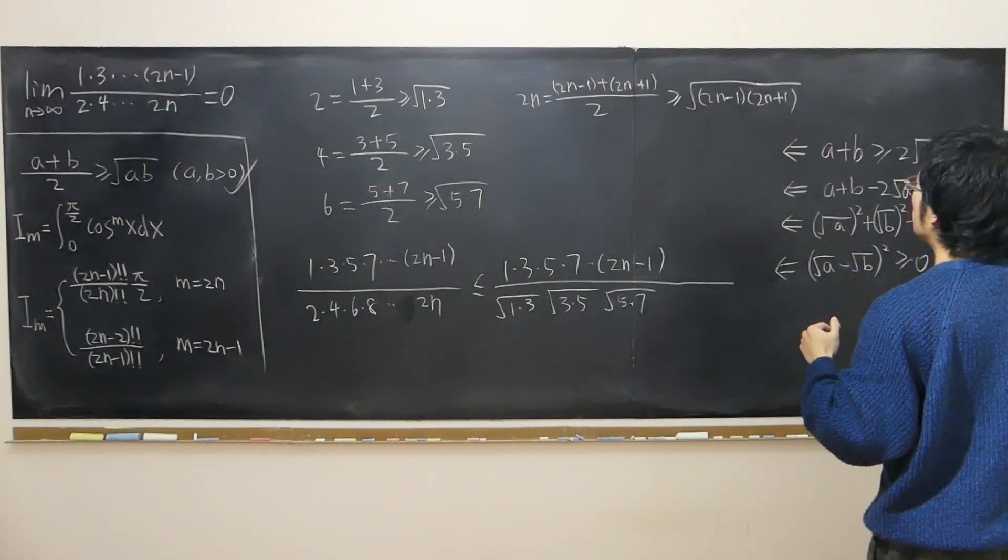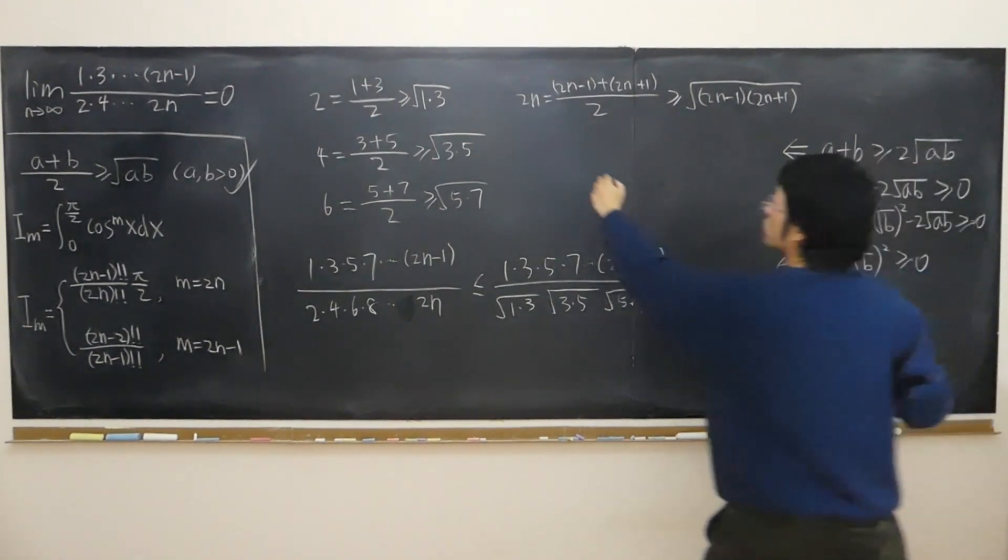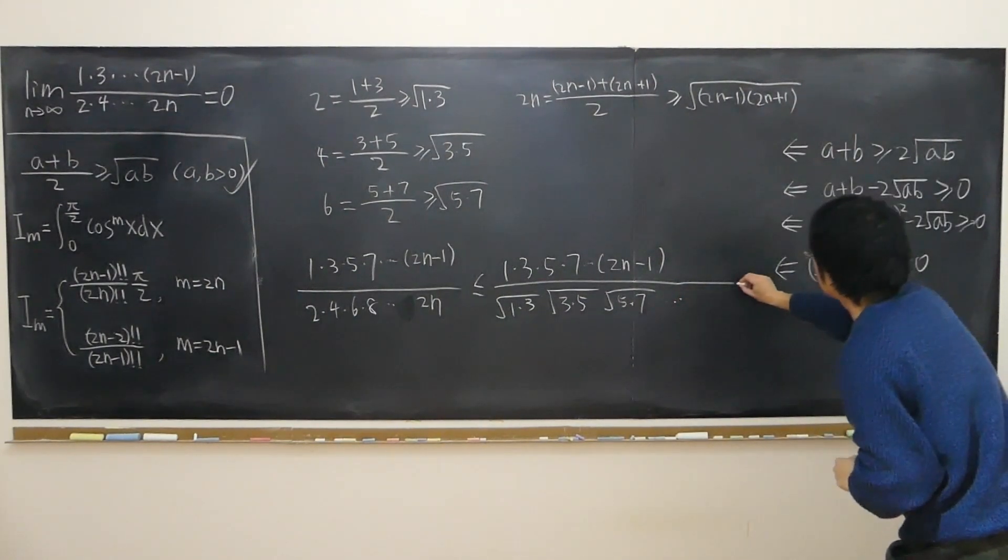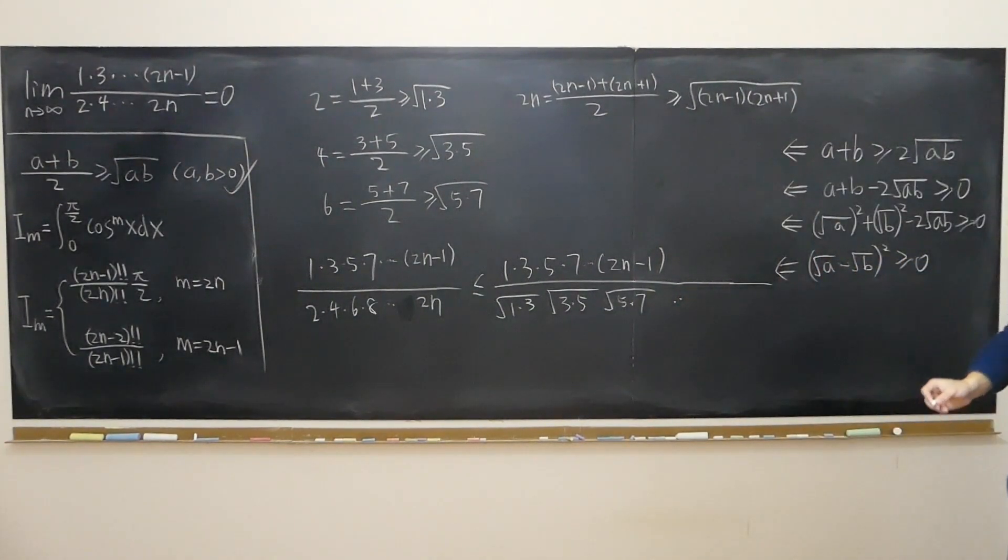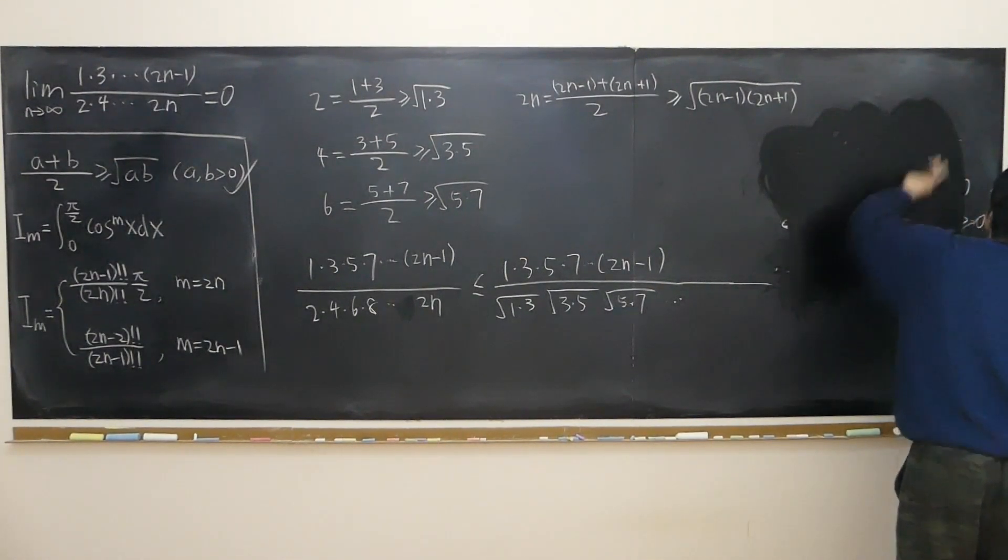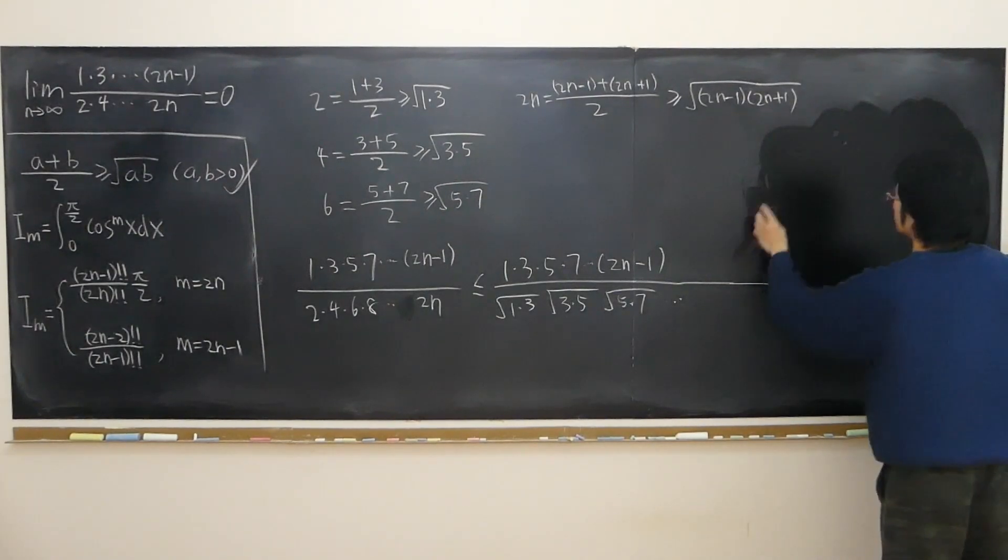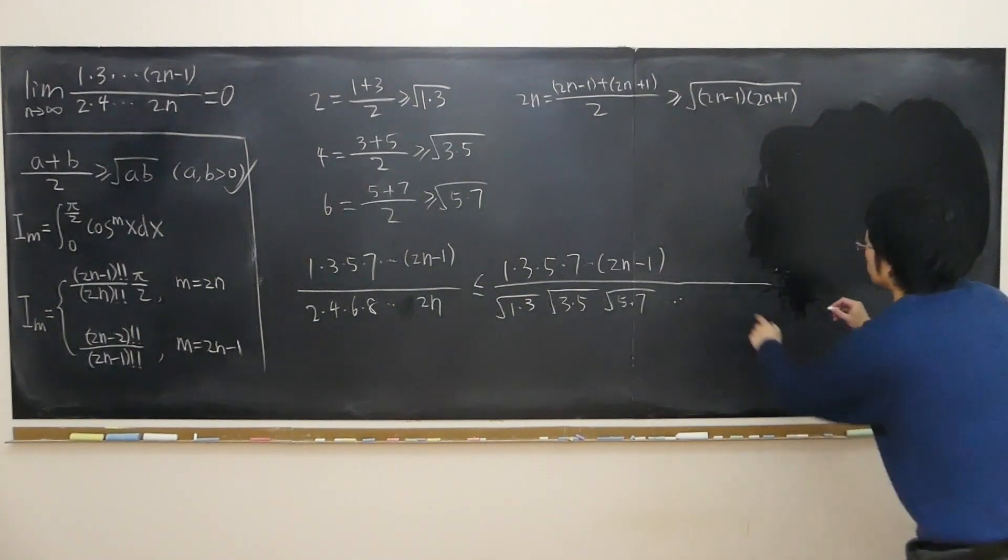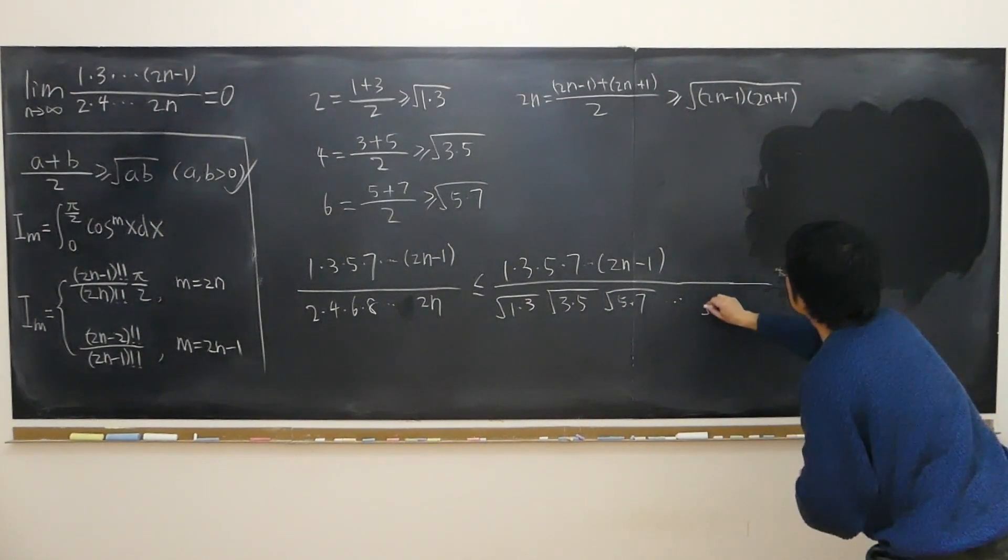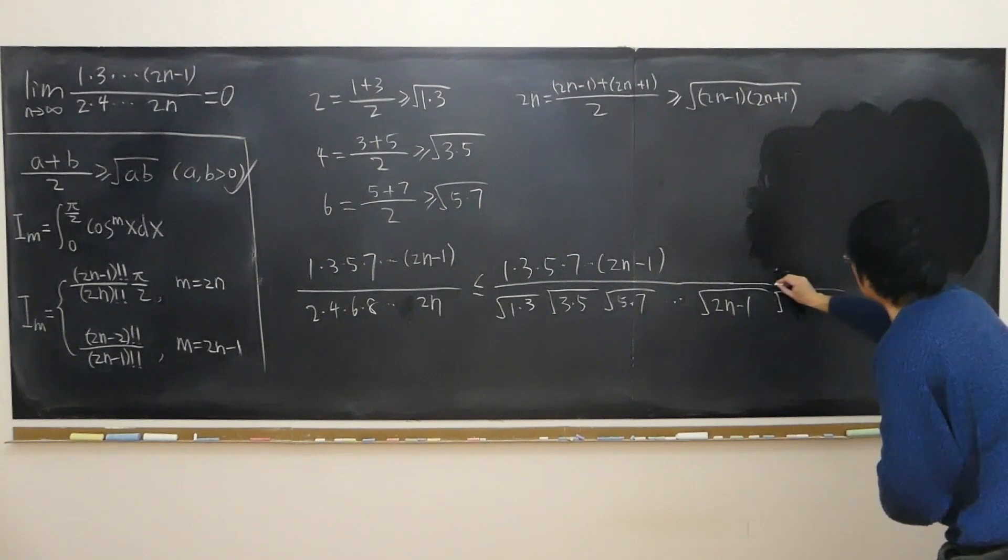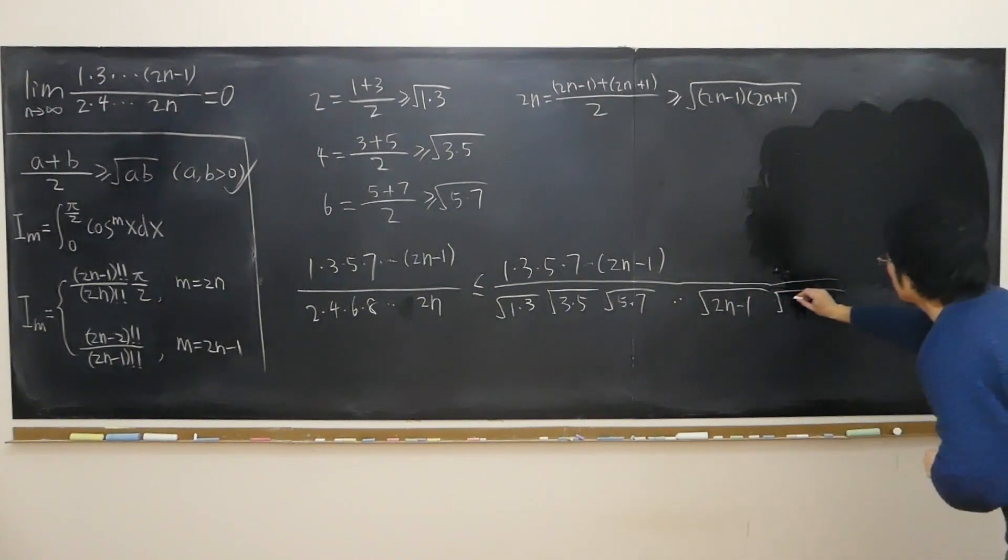So in the end I shall replace 2n with this, so I have to just clear this up. All the way up to 2n minus 1 times the square root of 2n plus 1.